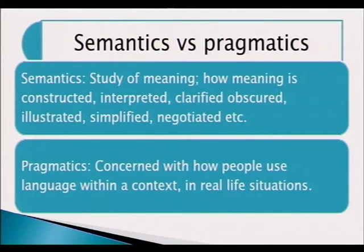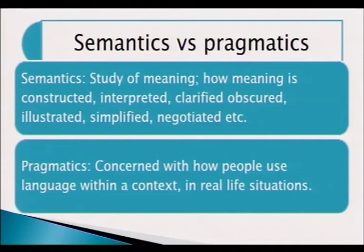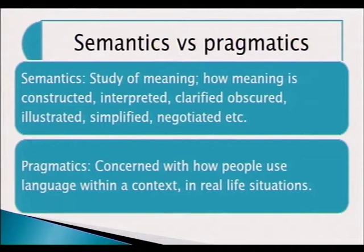Pragmatics is how people use language within a context in real life situations. Here we are talking about utterances — the way things are said. If somebody says a word when they are angry, we know that they don't like it. But if they say it smilingly, we know that they appreciate what has happened. The words attached to the situation in which they are used will also determine the meaning. That is how semantics and pragmatics are different.